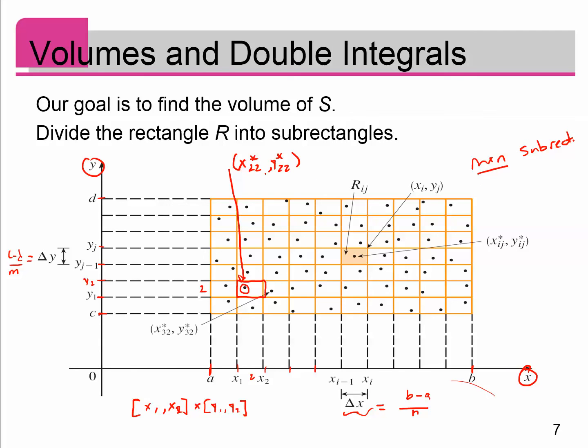So pick one of these intervals, like, this is the ijth subrectangle. It's the i-th interval in the x direction. It's the j-th interval in the y direction. So I would call this rectangle R_{ij}. And then the point in here, I'm going to call x_{ij}^* and y_{ij}^*.